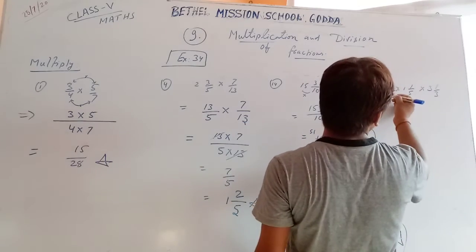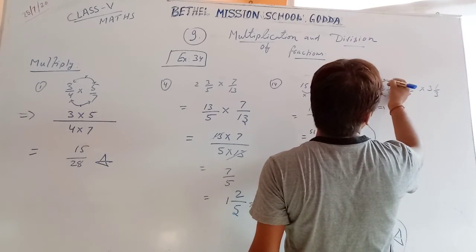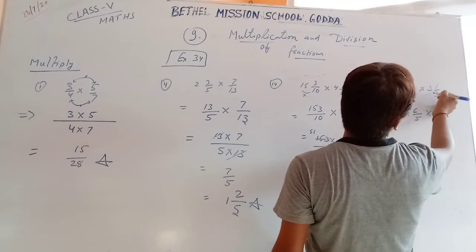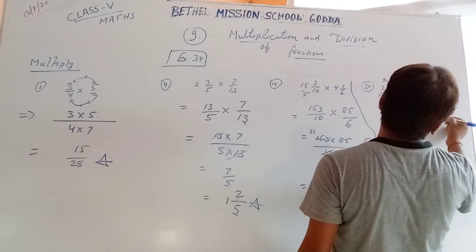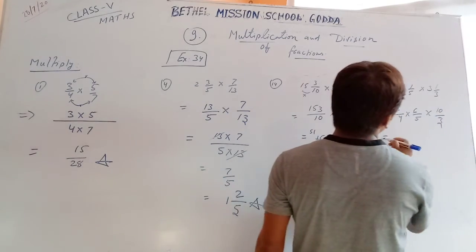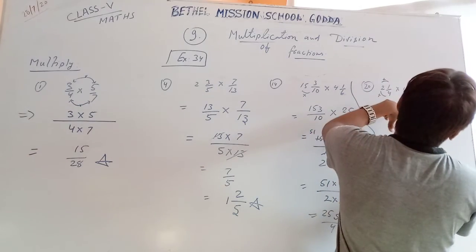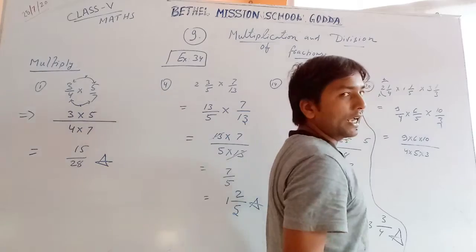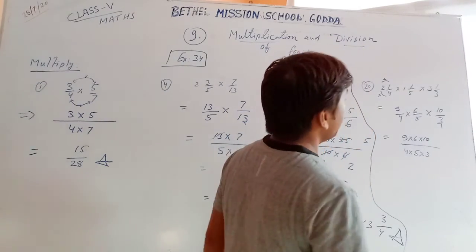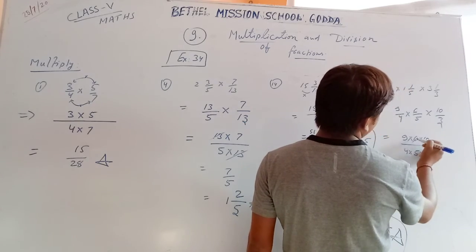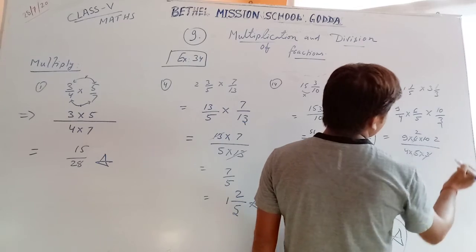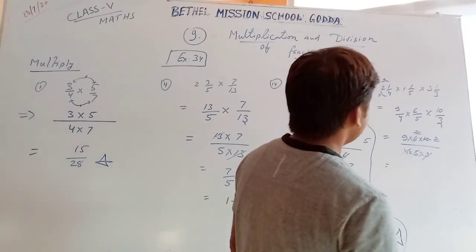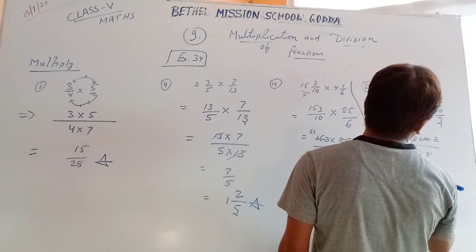Now question 20: change all to improper fractions. 4 times 8 plus 1 is 33... 9 upon 4; 5 times 1 is 5, plus 1 is 6 upon 5; and 3 times 3 is 9, plus 1 is 10 upon 3. Now multiply all numerators: 9 into 6 into 10, by all denominators. Any numbers that can be cut: 3 into 6 is 2, 5 into 10 is 2, and 2 and 2 give 4 — these cancel. Only 9 is left, so the answer is 9.